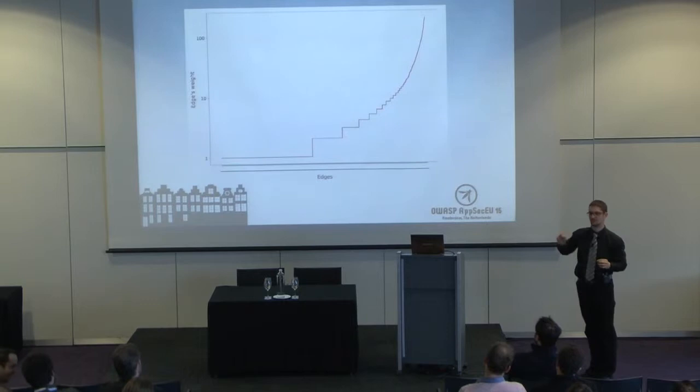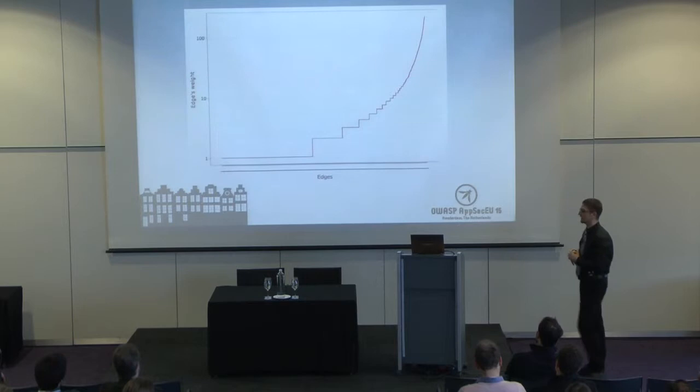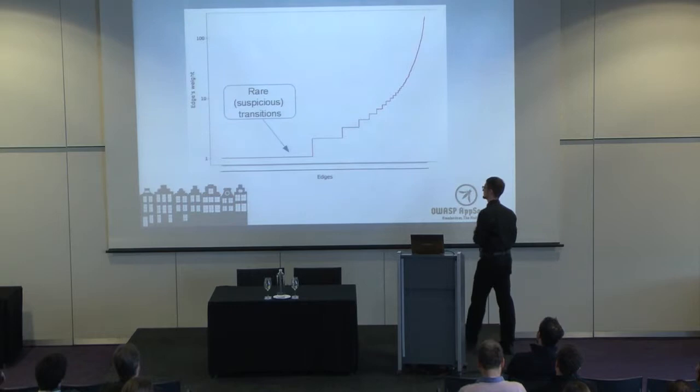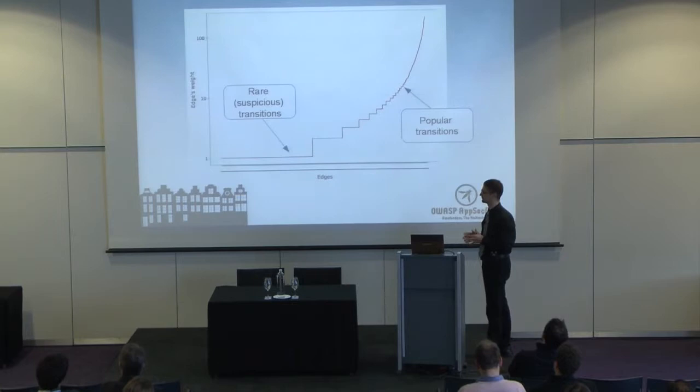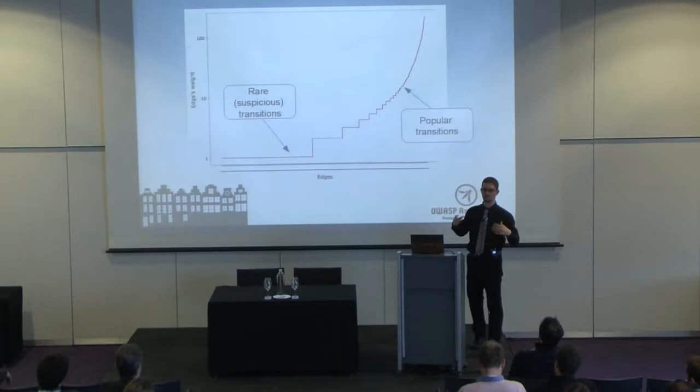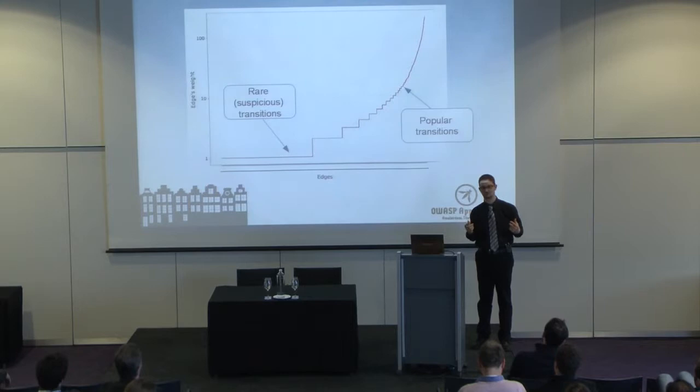The distribution shows the number of transitions that happened between a certain URL and another URL. There is a large number of very rare transitions that happened only once during the period when the graph was built, and of course we have popular transitions that relate to typical usage patterns.